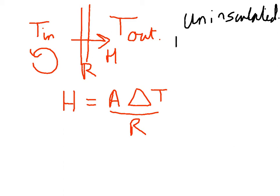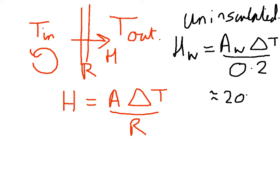Then heat coming out through the windows is going to be the area of the windows, it's 40, times delta T over 0.2. So that's going to be about 200 delta T watts.